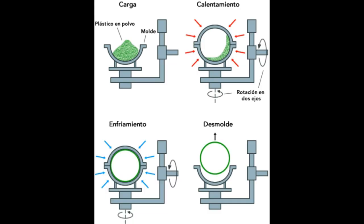Roto moldeo: en este proceso una cantidad de plástico frío en polvo líquido se introduce en la mitad del molde, también frío. El molde se cierra y se hace rotar en torno a dos ejes en el interior del horno. Cuando la superficie metálica del molde se calienta lo suficiente, el plástico comienza a fundir y se adhiere a las paredes internas del molde. El plástico se va fundiendo en capas sucesivas y, gracias a la rotación biaxial, cuando todo el plástico ha fundido, el interior del molde debe estar completamente recubierto.